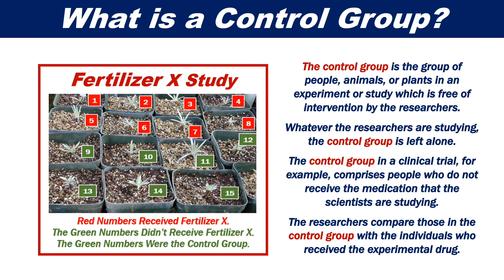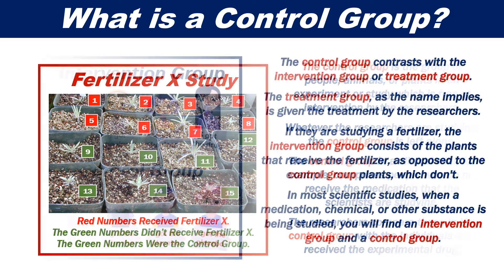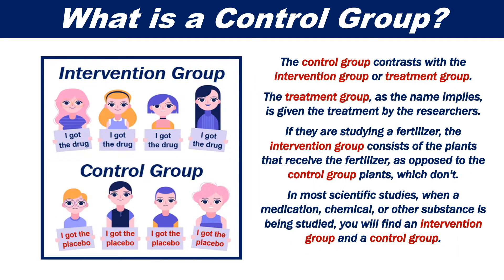The control group in a clinical trial, for example, comprises people who do not receive the medication that the scientists are studying. The researchers compare those in the control group with the individuals who receive the experimental drug. The control group contrasts with the intervention group or treatment group.